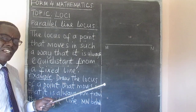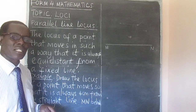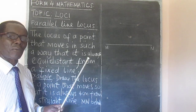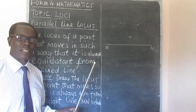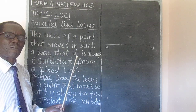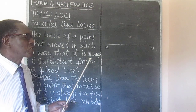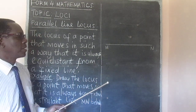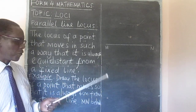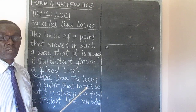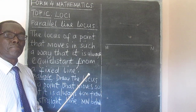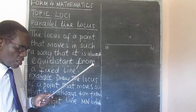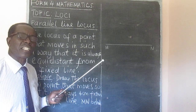The other time it was from a fixed point. Today, it's a point that moves in such a way that it is the same distance from a fixed line. That's why we have drawn line MN here. Before we go to the actual construction, remember we said loci is the application of geometric construction.